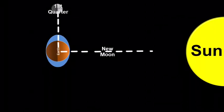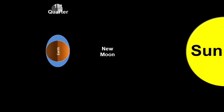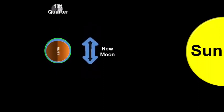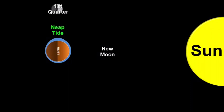When the moon moves to the first quarter position, the moon and the sun are at a 90-degree angle and gravity pulls in different directions. The sun's gravity cancels the effect of the moon's gravity, and therefore the high tides become less high and the low tides become less low. This type of tide is called a neap tide.